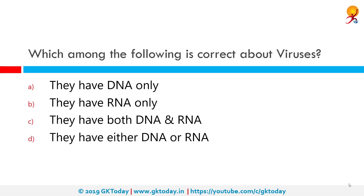Which among the following is correct about viruses? The correct answer is they either have DNA or RNA. Most viruses have either RNA or DNA as their genetic material. The nucleic acid may be single or double stranded. The entire infectious virus particle, called a virion, consists of the nucleic acid and an outer shell of protein.